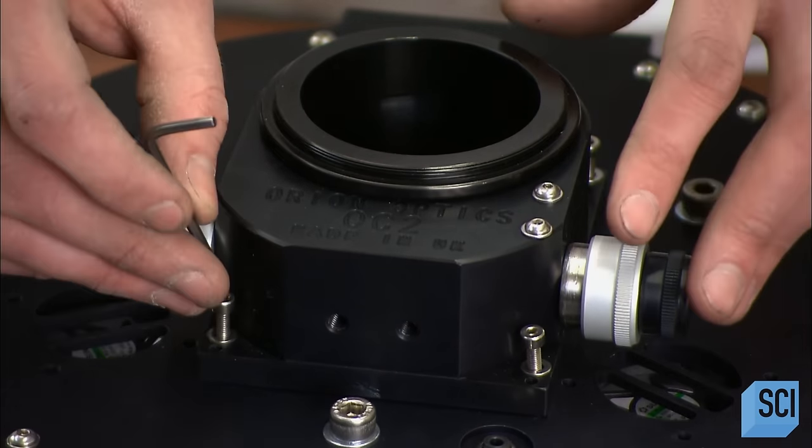He joins the baffle and mirror assembly to the telescope tube. The tube has already been equipped with a secondary mirror that will bounce reflected images from the primary mirror back for magnification and viewing.